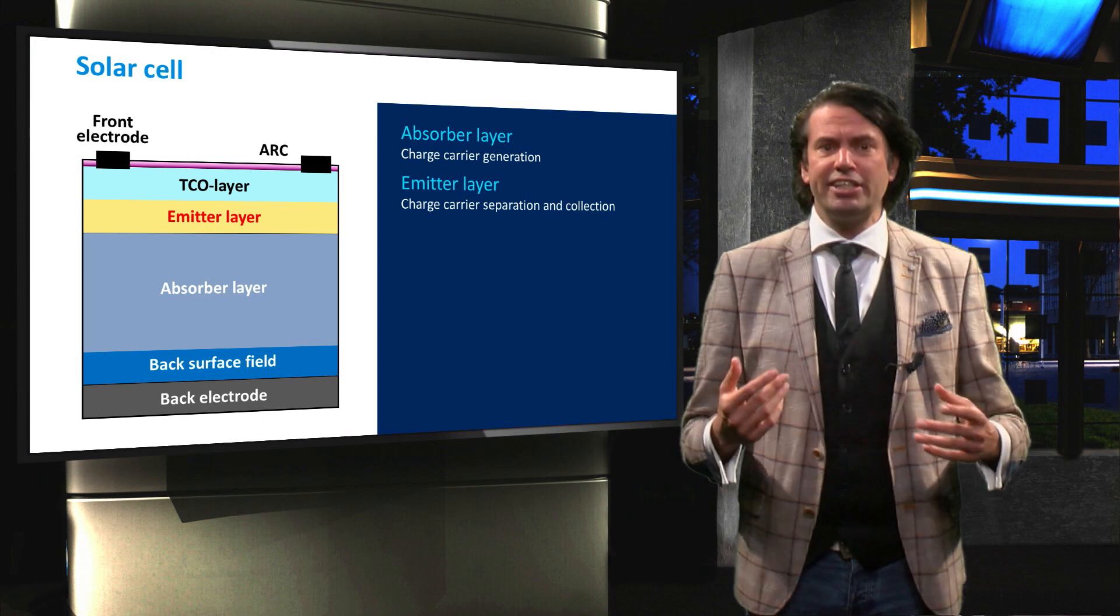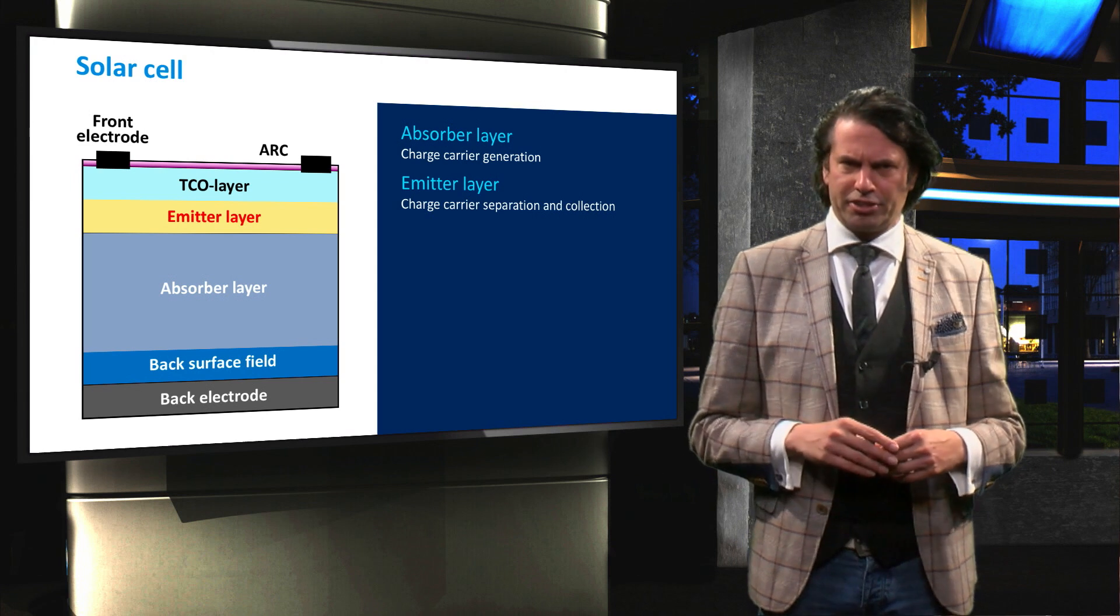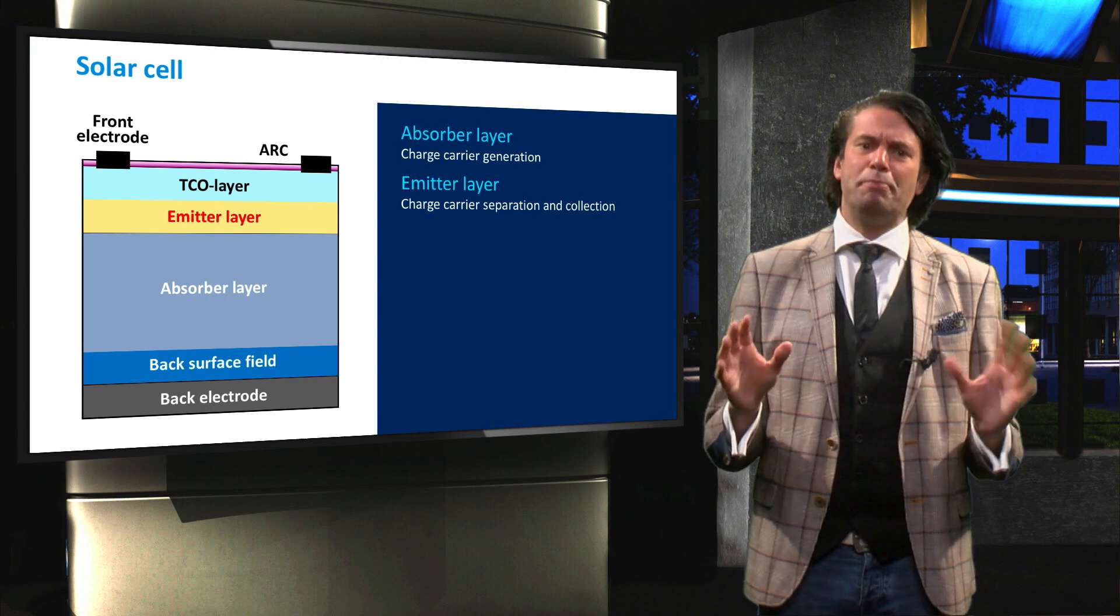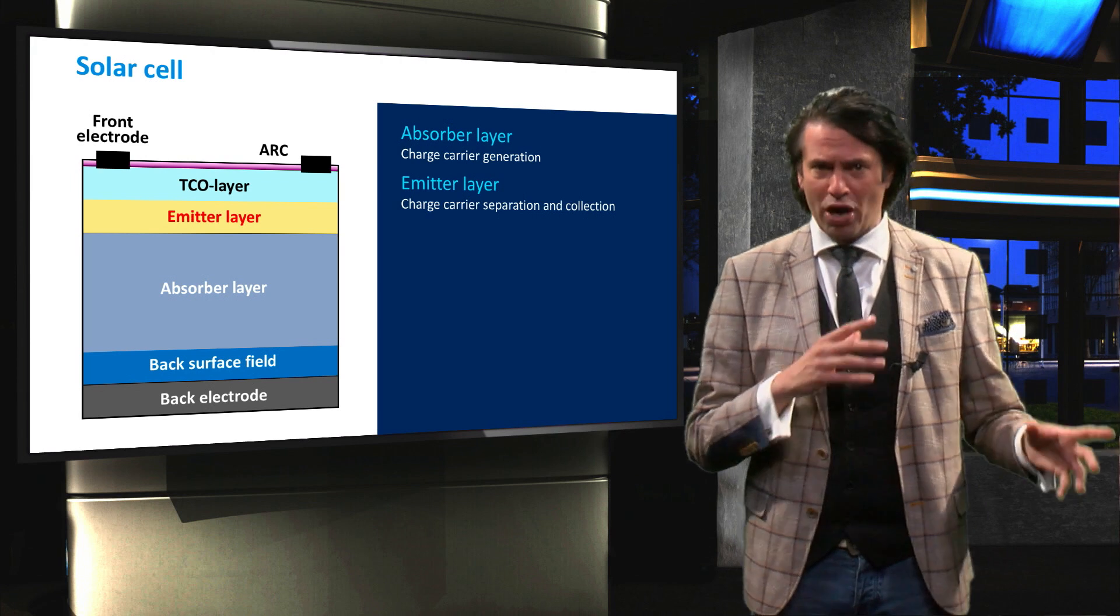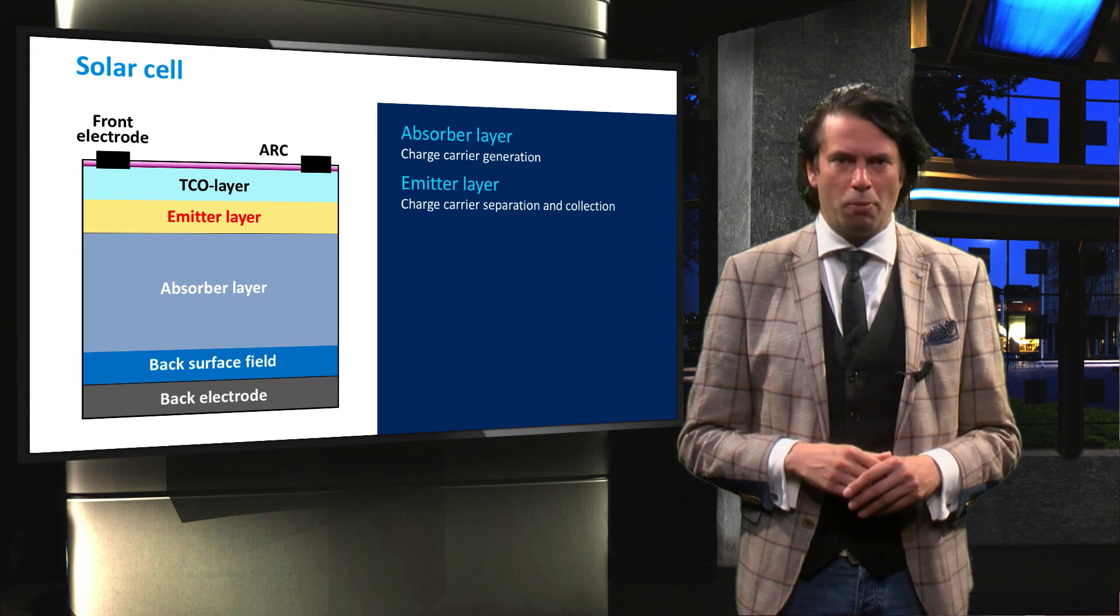The membrane resists the movement of majority carriers, in this case holes. Without the emitter layer, generated charge carriers would simply move around in the absorber layer until they recombine.